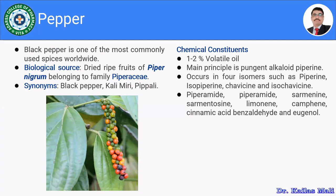We are using dried ripe fruits as a drug in medicine to get certain health benefits. Black pepper is obtained from dried ripe fruits of Piper nigrum, belonging to family Piperaceae. This is the biological source. The synonyms include black pepper, kali mirch, or pippali.